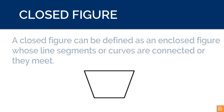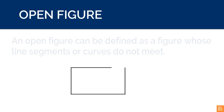It is important to have a clear understanding of the basic concepts. In geometry, a closed figure can be defined as an enclosed figure whose line segments or curves are connected or they meet. An open figure can be defined as a figure whose line segments or curves do not meet.